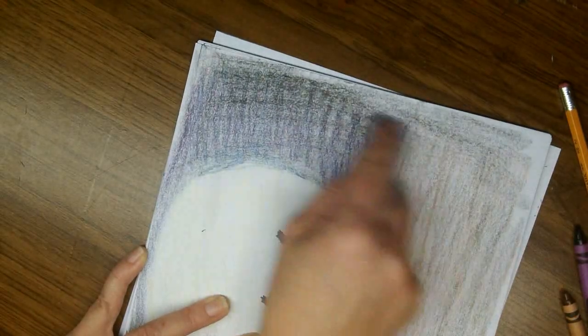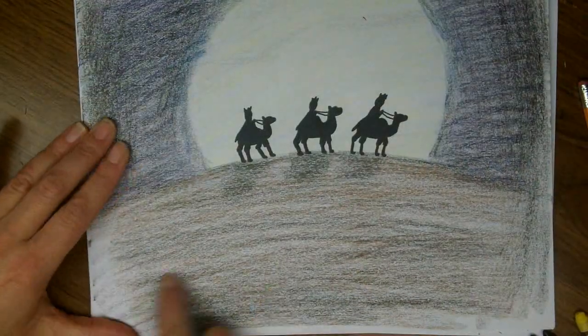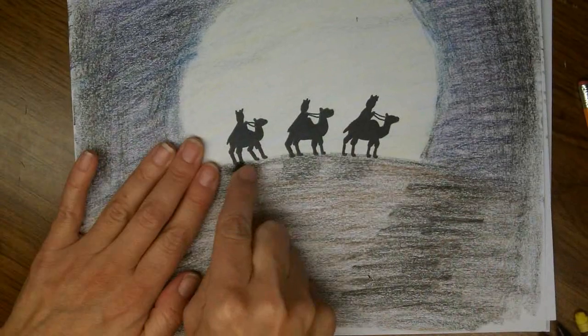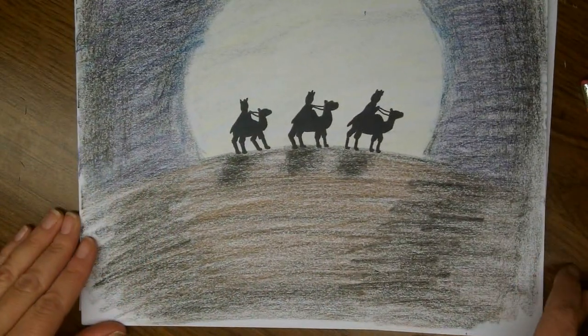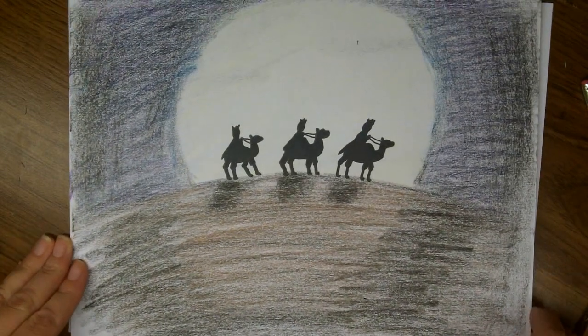Blending this in. I'm turning my paper. It's easier for me to work side to side than it is up and down. And I'm darkening up the shadows and filling in some more brown. And that's it.